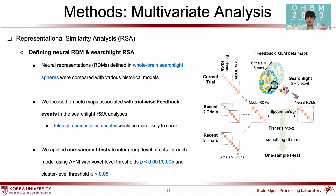We computed pairwise distances between two historical patterns for each trial pair, leading to six trial-by-trial model RDMs. These historical model RDMs were compared with neural RDMs defined in whole-brain searchlight spheres. We focused on feedback event beta maps, where internal representation updates would occur. For group inference, we applied a one-sample t-test using AFNI, and resulting clusters defined by two voxel-level thresholds were corrected.